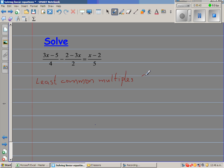To find the least common multiple of 2, 4, and 5, there are different ways, but I like to think about the multiples of the largest number.